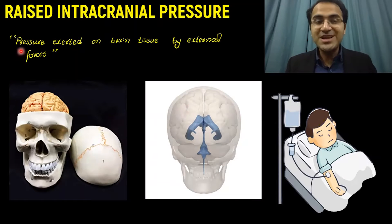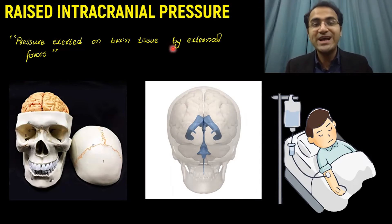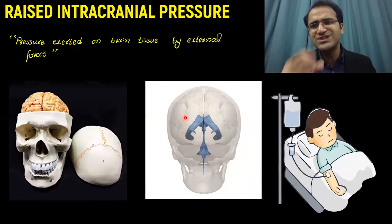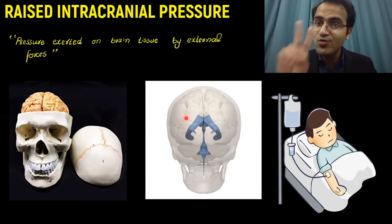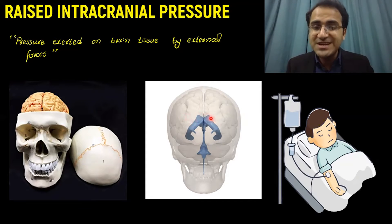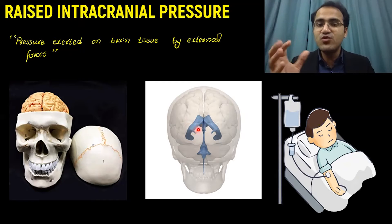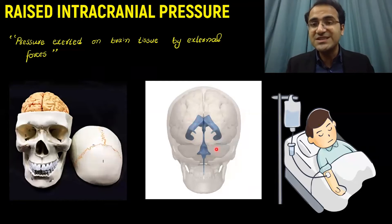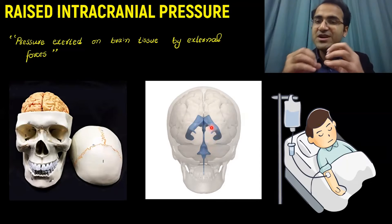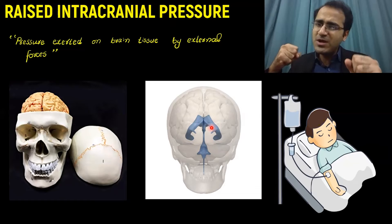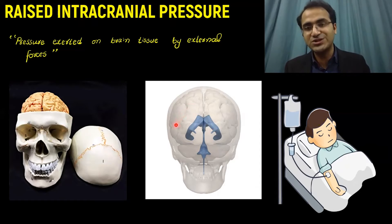Intracranial pressure is defined as pressure exerted on the brain tissue by external forces. There are two external forces: CSF (cerebrospinal fluid) and blood. Cerebrospinal fluid is produced in the ventricles — lateral ventricles, third ventricle, fourth ventricle. Whenever there is excessive production or decreased drainage of CSF, it accumulates within the ventricles, causing them to dilate and exert pressure on the brain, resulting in raised intracranial pressure.